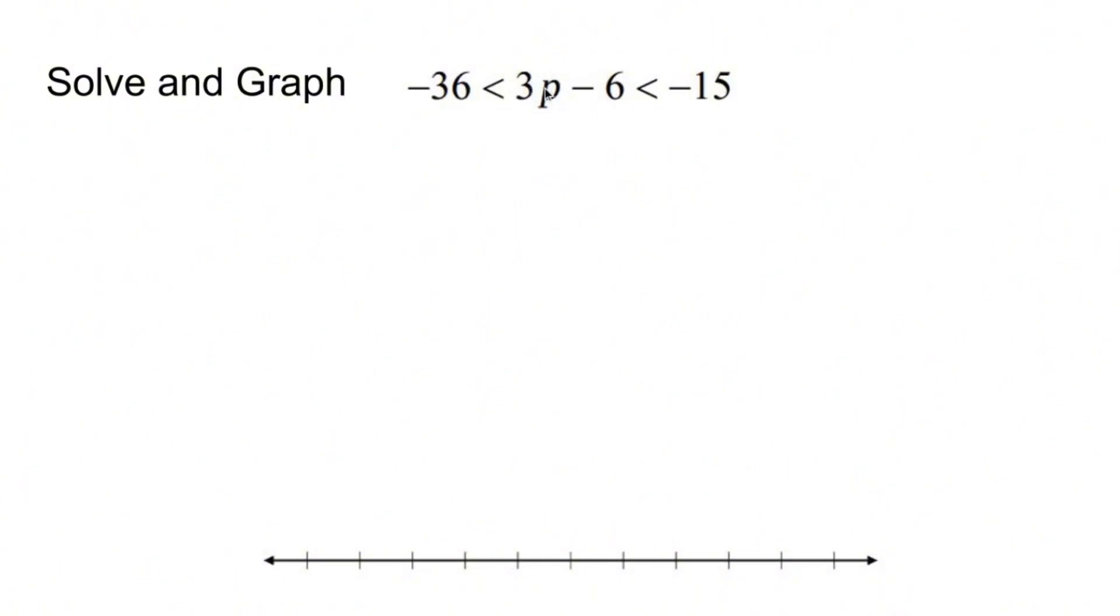In this case, this problem is a little different because the variable is not alone, not even close. I have what appears to be a two-step equation. So when you have a compound inequality that's in-between like this, whatever you do to the middle, you do to all three sides.